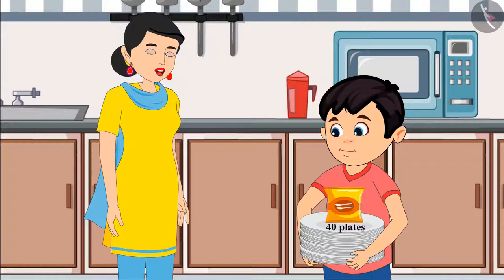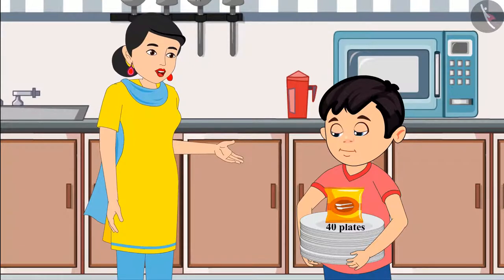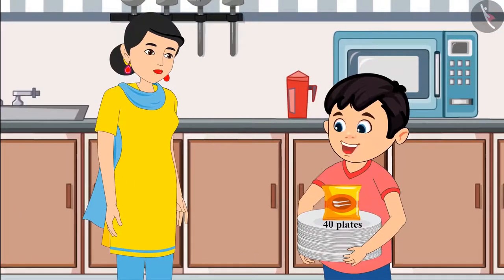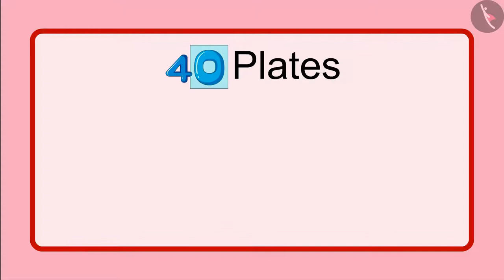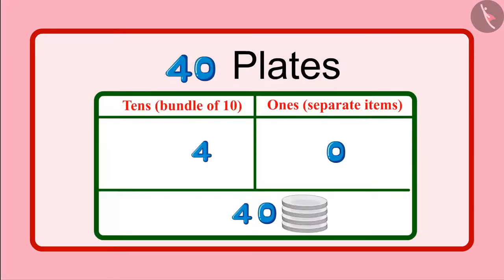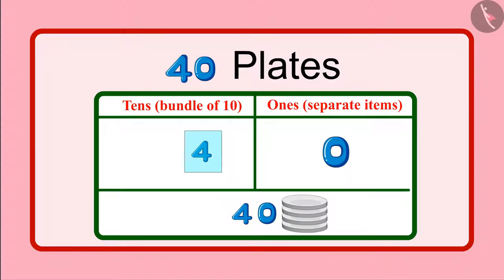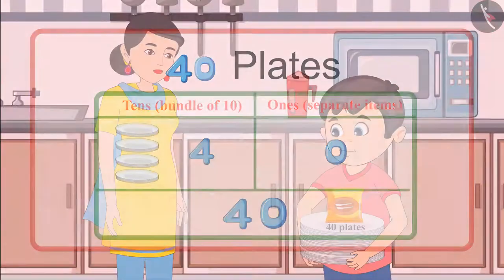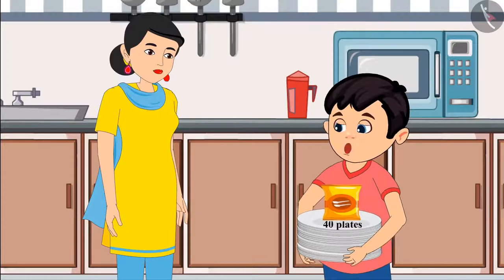Mother corrects him: "No no, Chotu, you are reading it wrong. It's written here 40 plates, which is four groups of 10 plates." Chotu asks: "But Mommy, even zero is written here — what about it?" Mother explains: "Here, zero is written in place of units, which means not a single open plate. And instead of 10, it is written four, which means four groups of 10 plates — meaning 40 plates total." Chotu: "Okay, now I have understood, Mommy!"